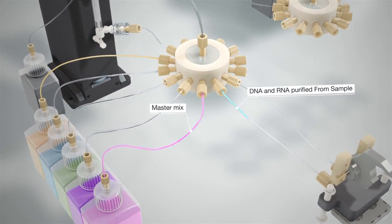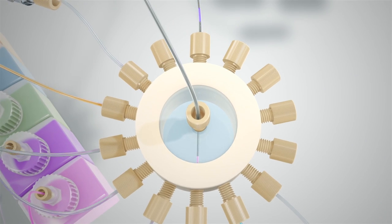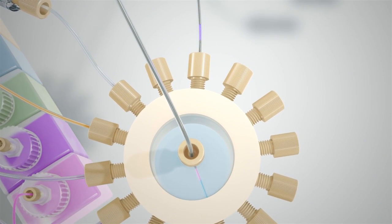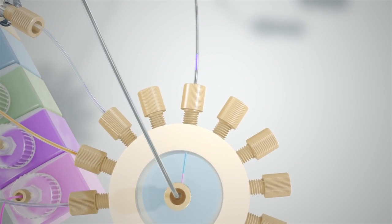The DNA and RNA are mixed with master mix at the valve and then this mixture is directed to the same line containing the previously assembled negative control.